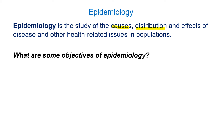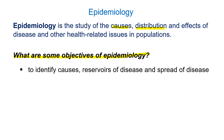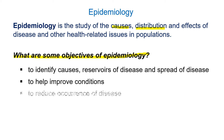Today we're going to be talking about things like transmission and reservoirs. What are some objectives of epidemiology? This is really a big public health thing where we want to identify causes of diseases and reservoirs of disease. This is a huge focus right now as we're going through the COVID-19 pandemic, trying to understand exactly how the disease is spread.